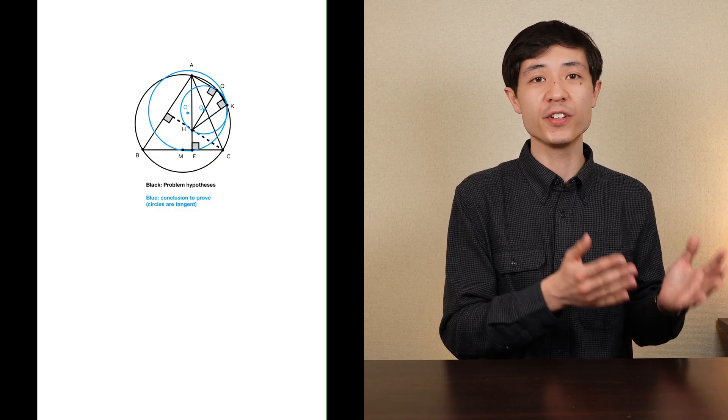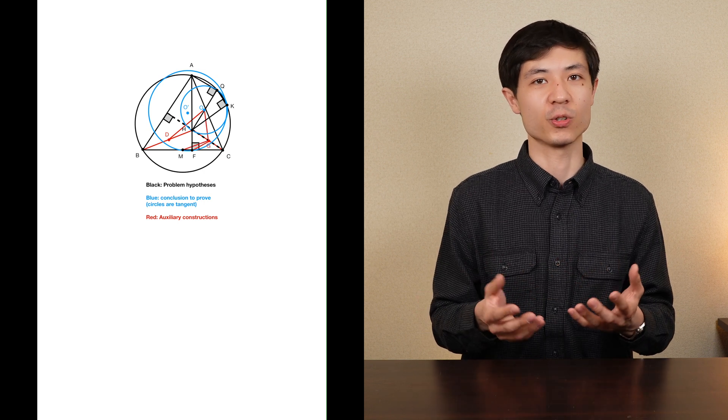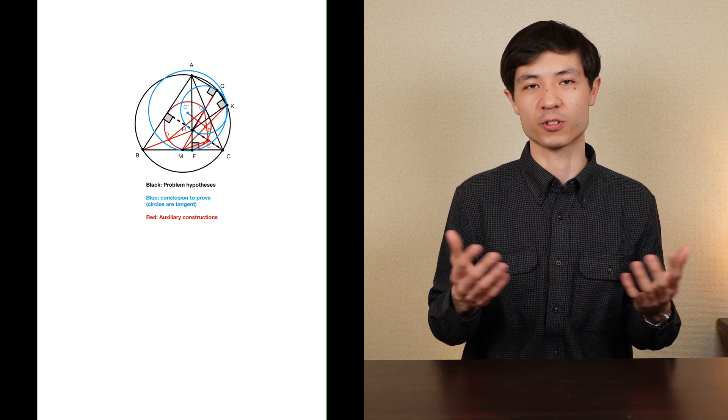AlphaGeometry: what it can and cannot do. Today's algorithm AlphaGeometry has been designed to solve geometry problems from the International Math Olympiads which is arguably one of the most difficult math competitions for high schoolers. We're talking here about geometry problems similar to what you may have encountered in high school but at much higher level of difficulty. The average solution is a proof of 50 steps and most of the time requires to draw additional lines, circles and points called auxiliary constructions.